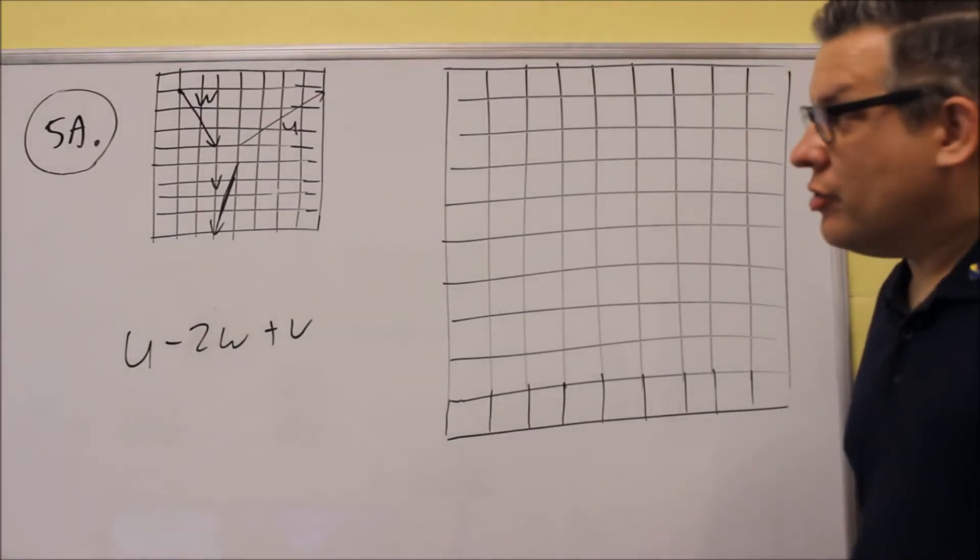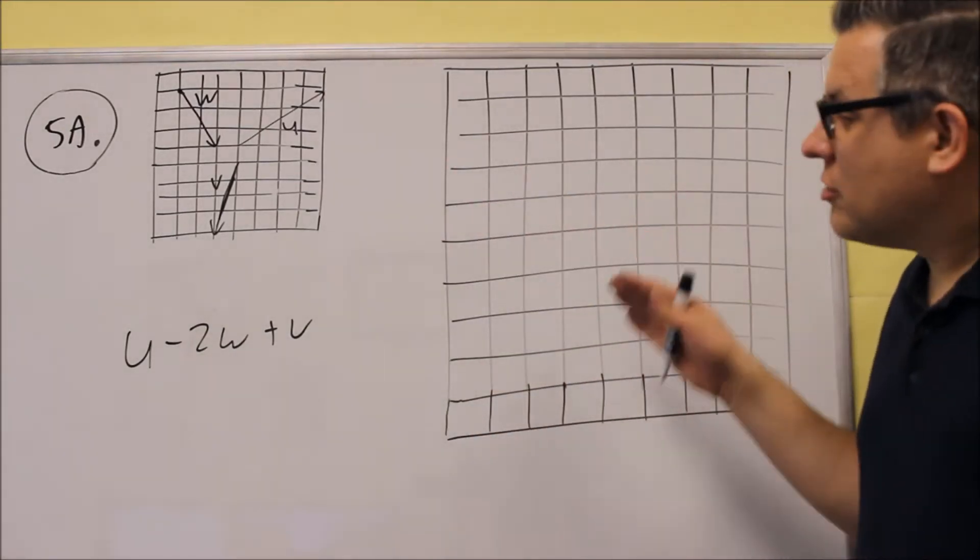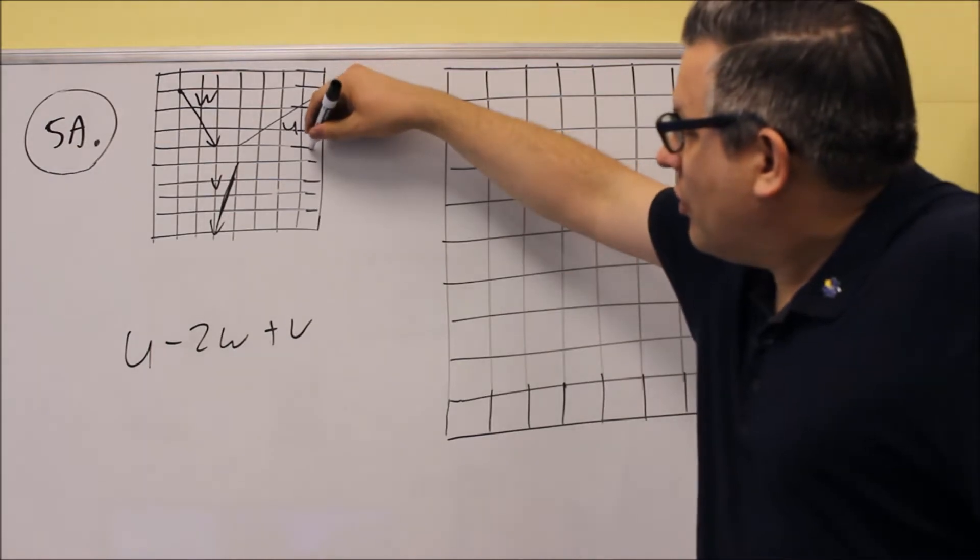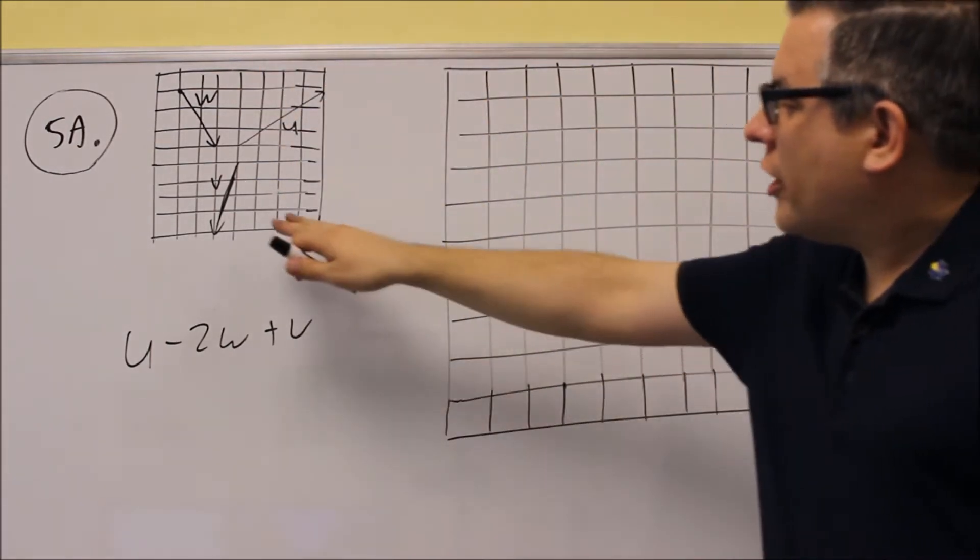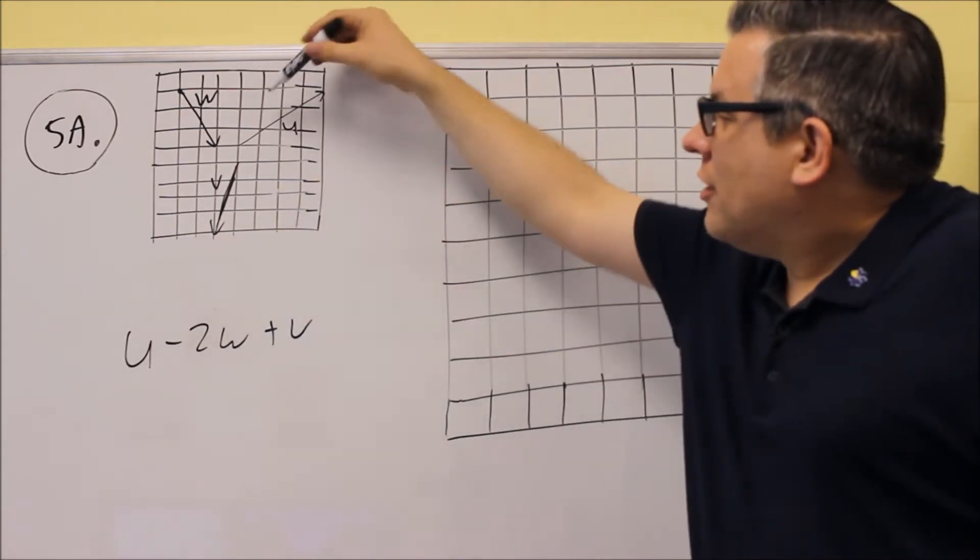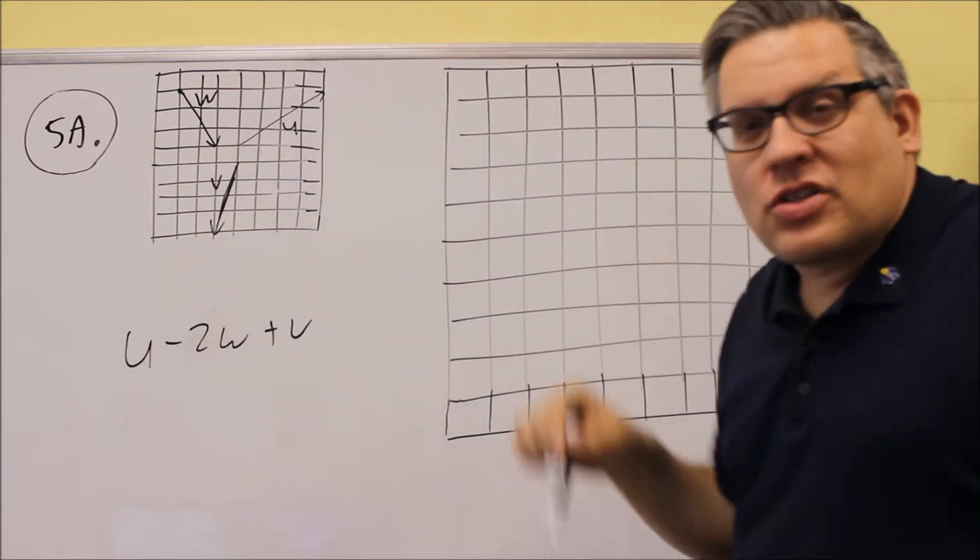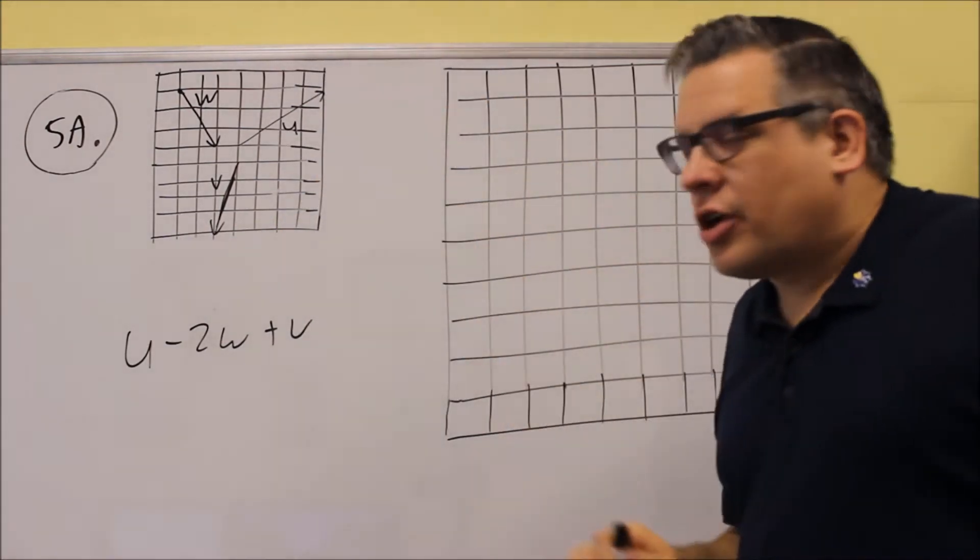Number five is going to require you to draw the vectors. They give you this picture right here where the vectors are already pre-drawn out for you and it tells you how long they are, how many boxes they take up, and which direction they're going in.